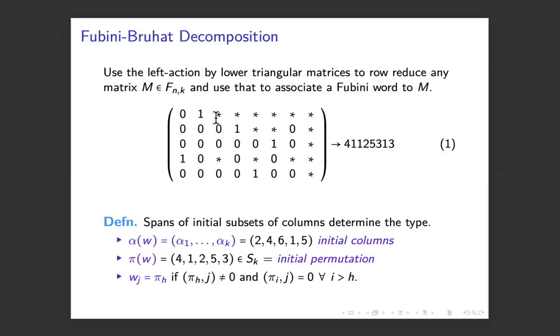If the star at the top is not zero, then we would use that one to rescale it to be one. If all of the stars were non-zero, I would associate to this one 4,1,1,2,5,3,1,3. I put down here the specifics if you're interested. The idea is it's a concrete algorithm.